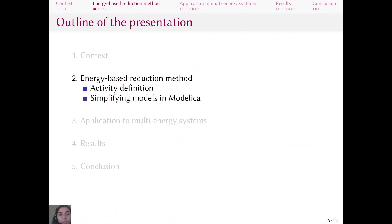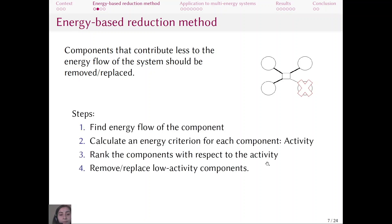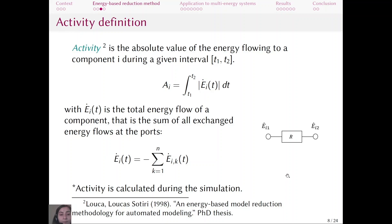So what is the energy-based reduction method? This method helps us find components that contribute less to the energy flow of the system and then remove or replace them. First, we define the energy flow of each component and calculate an energy criterion — here, the activity. Then we rank components with respect to their activity, and finally remove or replace the low-activity components. The activity, as defined by Luca for bond graphs, is the absolute value of the energy flowing to a component during a given time. The total energy flow of a component is the sum of the energy flows at its ports, and the activity is calculated during simulation.